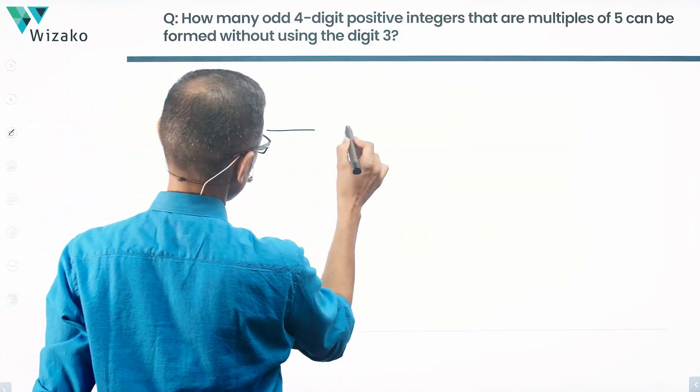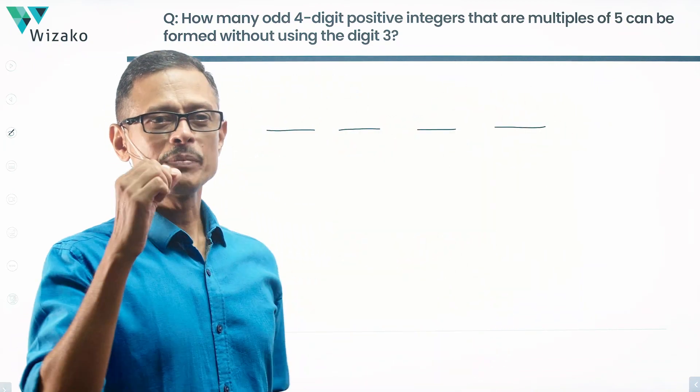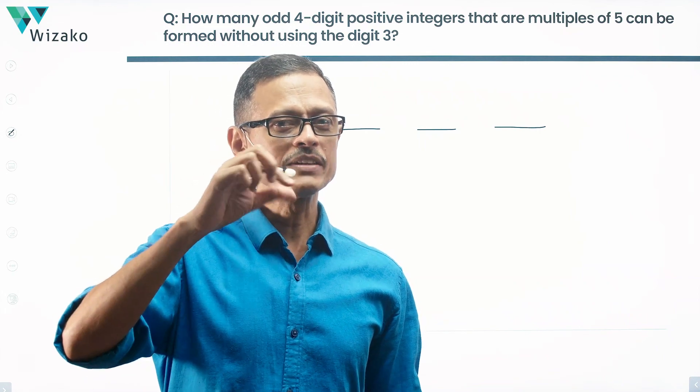We'll start with it. It's a 4-digit number: 1, 2, 3, 4. The number should be a multiple of 5. Its unit digit will be 0 or 5.